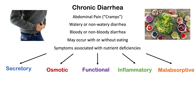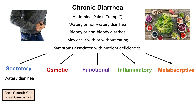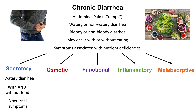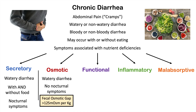Each category has particular symptoms. Secretory diarrhea is watery, and a key finding is that it occurs with and without food — patients can go a long time without eating and still have diarrhea. Because of this, it can also occur at night, waking the patient from sleep. Osmotic diarrhea is also watery, but in contrast, it does not have nocturnal symptoms and occurs only after eating something.